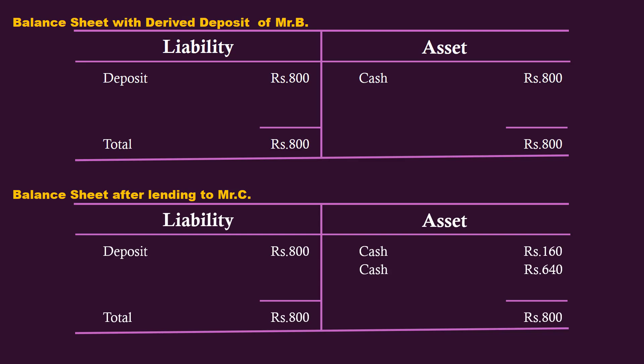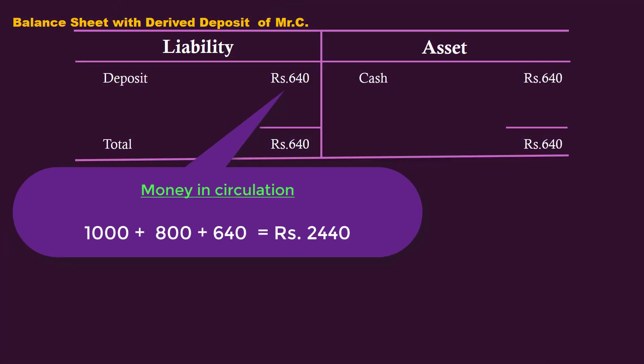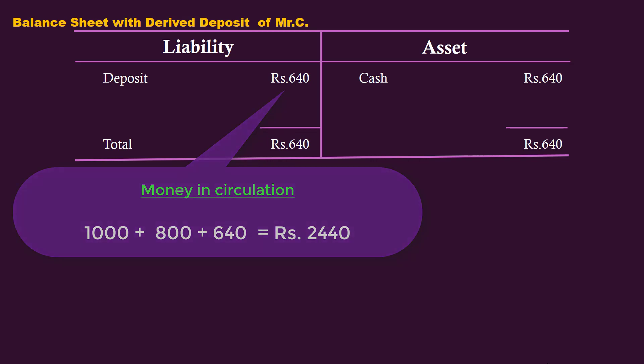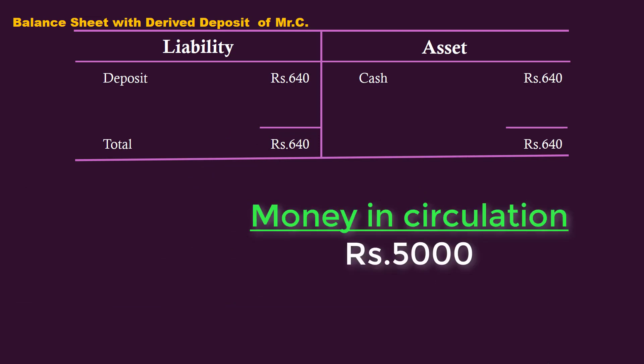Then, with this transaction, the balance sheet of the bank is updated. After the creation of the new deposit in the name of Mr. C, the money in circulation increases further. This process of lending will continue until the deposit amount becomes too small to create a new loan. At the end of the process, the money in circulation will be 5000 rupees.